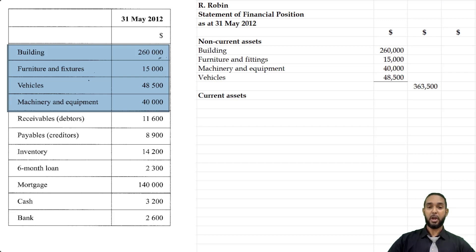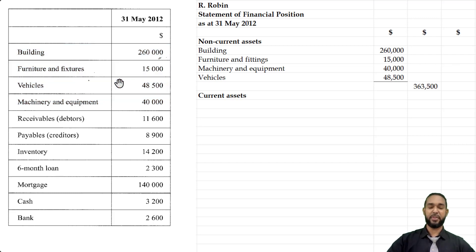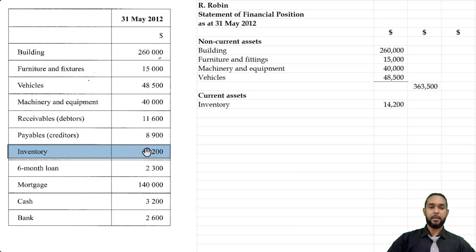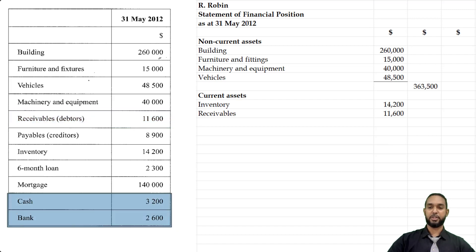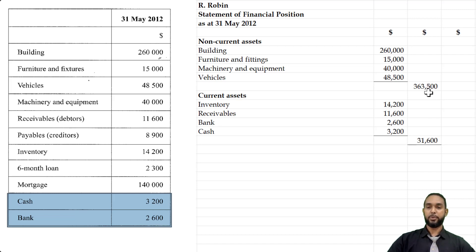Now we're going to start with our current asset section. With current assets we go stock, debtors, bank and cash. So let's look for the inventory — we have inventory of $14,200, and we'll populate that across here. Then there were receivables of $11,600, so we're going to put that here as well. And don't forget we had cash and bank — bank goes before cash, because cash is considered the most liquid current asset and the least permanent in liquid form. So we have a subtotal for current assets of $31,006, which we'll add to our non-current assets subtotal of $363,500, giving us total assets of $395,100.